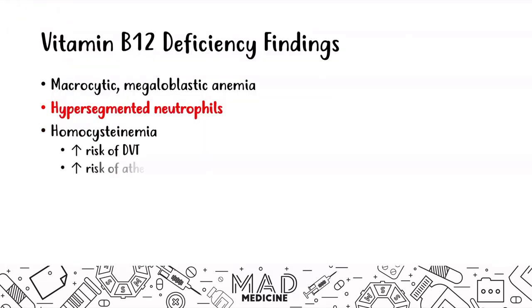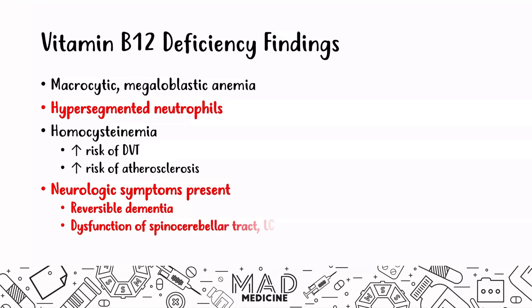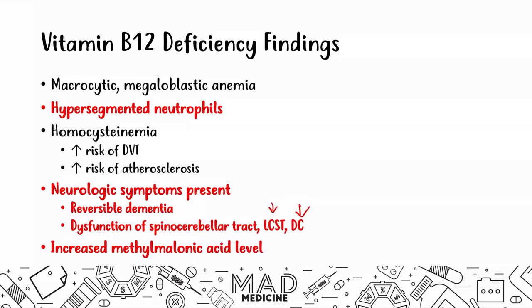You will also see homocystinemia, which increases the risk of DVT as well as atherosclerosis. Neurologic symptoms can be present in vitamin B12 deficiency — unlike in folate deficiency, where they're not usually present. In this case, you'll see reversal of dementia, as well as dysfunction of the spinocerebellar tracts, the lateral corticospinal tract, and the dorsal columns. You will also see increased methylmalonic acid levels in vitamin B12 deficiency.